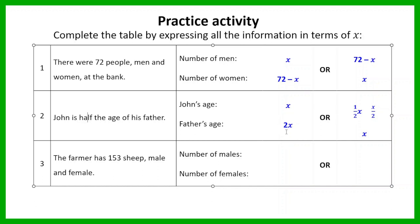For the third one: the farmer has 153 sheep, male and female. There are 153 sheep altogether, so that is the total. If we make the number of males x, the number of females will be 153 minus x. Or I could make the number of females x, in which case the number of males would be 153 minus x.